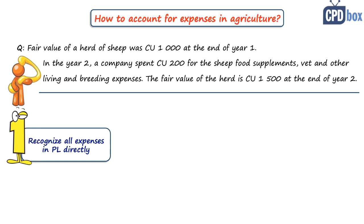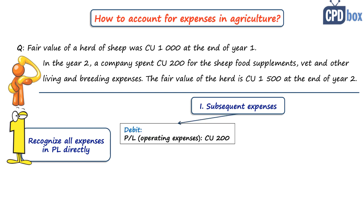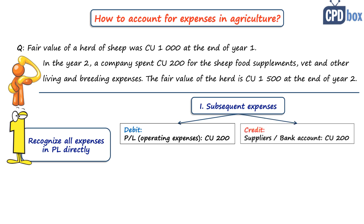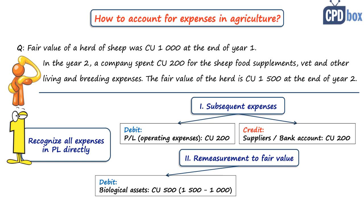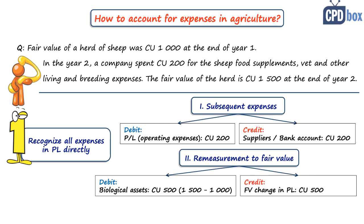Under option one, the journal entry for subsequent expenditure is: debit profit or loss (operating expenses) 200 currency units, credit suppliers/bank account 200 currency units. The journal entry to remeasure the sheep herd to fair value less cost to sell at end of year two is: debit biological assets 500 currency units — because fair value is 1,500 minus carrying amount of 1,000 equals 500 — and credit fair value change in profit or loss 500 currency units. The net effect in profit or loss is 300 currency units (gain of 500 less expenses of 200).